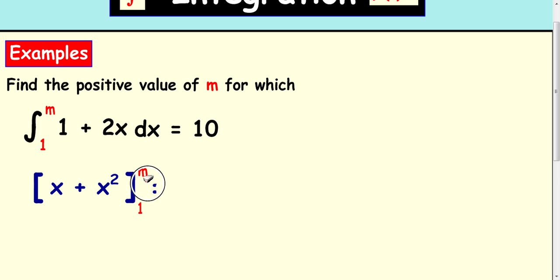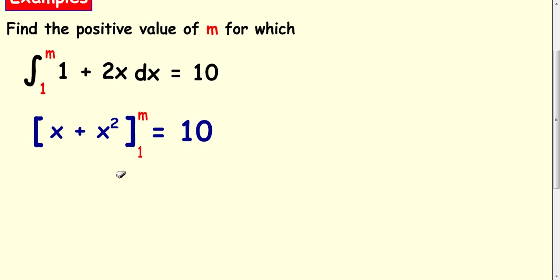And your limits are 1 and m, and that comes to 10. So put your m into both bits, do your subtract, and then put 1 into both parts here. That's going to look like this.